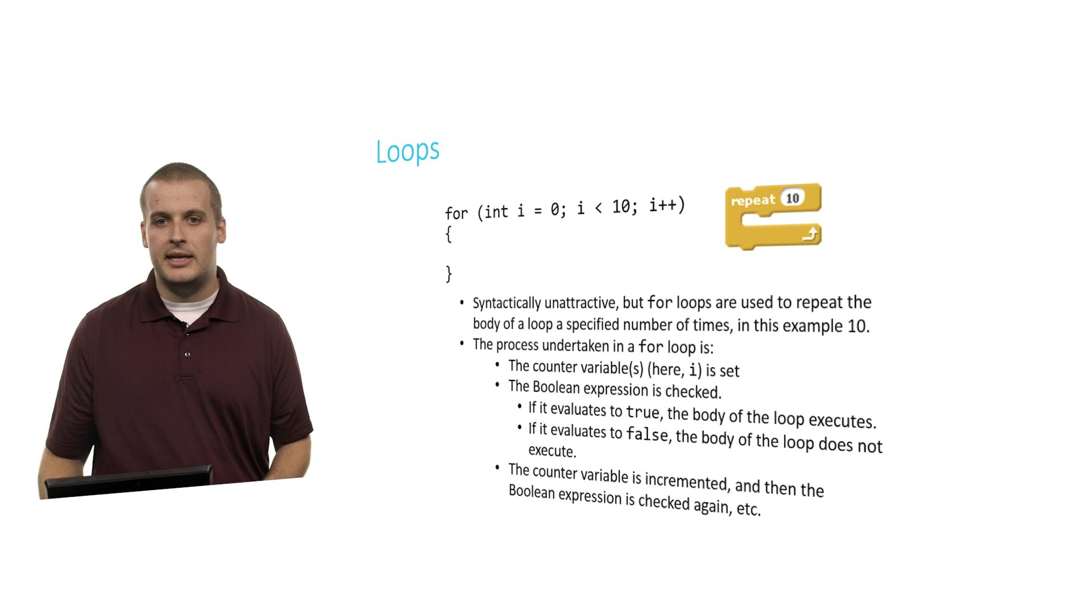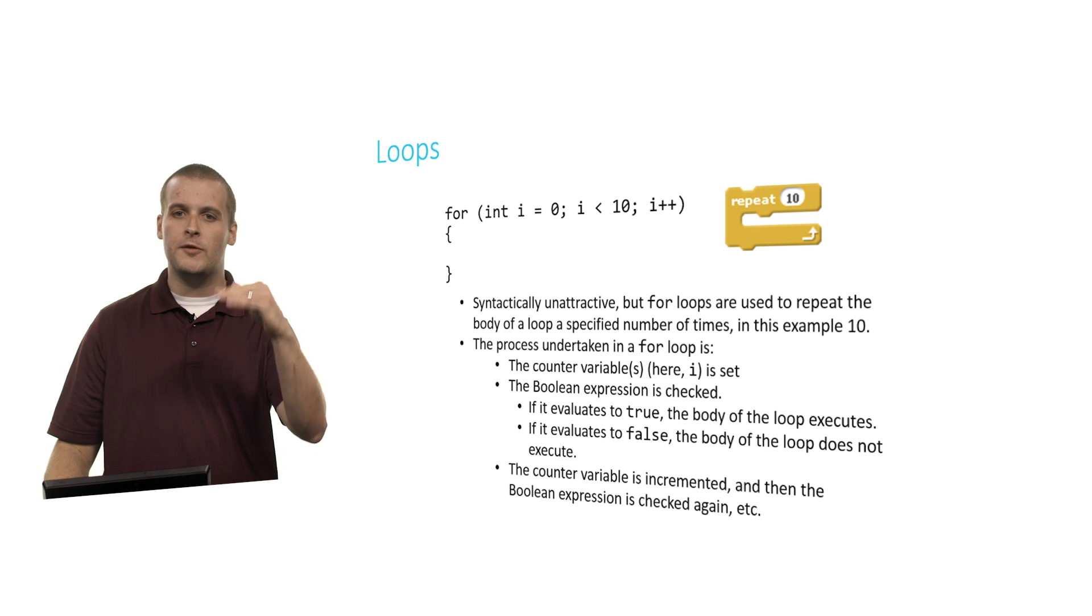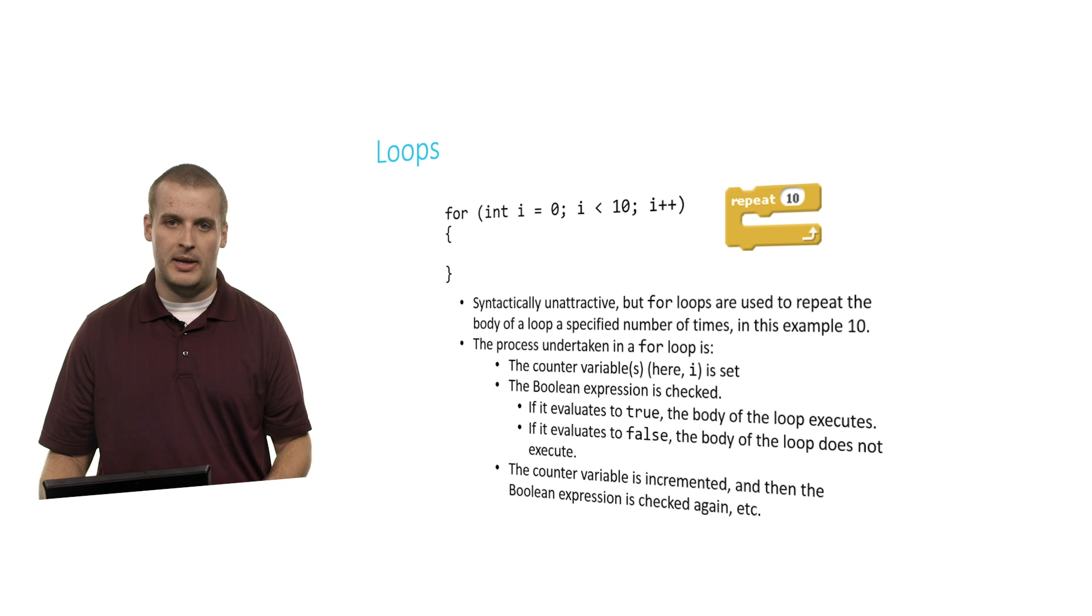If it was false, if, for example, I had said instead of i equals 0 there, I had said i equals 15, int i equals 15, well, 15 is not less than 10. So we would never enter the body of the loop, because the Boolean expression there would evaluate to be false. After we go through from top to bottom and we encounter that closing curly brace, a third thing happens. The counter variable is incremented. Or rather, the lines of code or the statements after the second semicolon inside of the for loop's parentheses is executed.